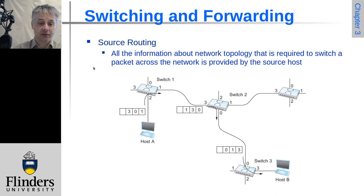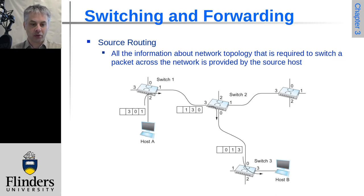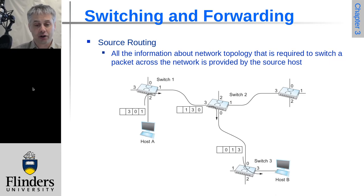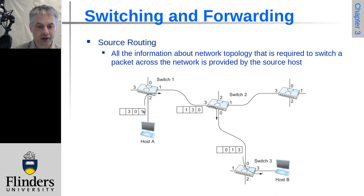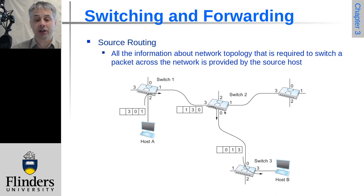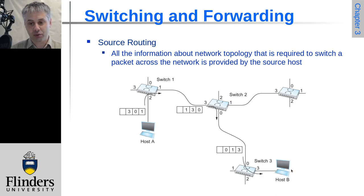Source routing is different from virtual-circuit-based networks. Here the source node specifies exactly how the frame should be sent — it's a bit like including the information needed for a virtual circuit in every frame. We specify a stack of interfaces through which the packet needs to travel. Host A sends it to Switch 1, which pops — or rather moves — the first entry to the end of the stack and sends it to Switch 2. Switch 2 now sees the next entry and sends it out on that port, again rotating the entry, and so on until the packet is delivered to Host B.